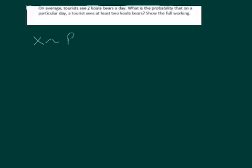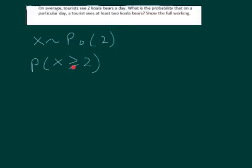Here's another example. On average, a zoo receives 2 koala bears a day. What's the probability that on a particular day the zoo receives at least 2 koala bears? This is a Poisson distribution with parameter lambda equal to 2 — it's 2 per day. What we want to know is the probability that x is greater than or equal to 2. Be careful about the phrase 'at least 2' — that includes 2, which is why there's an equal sign.